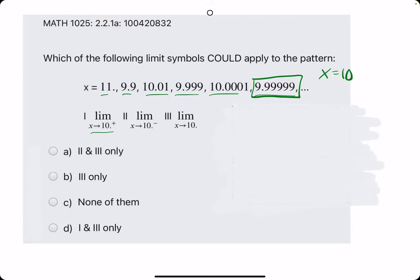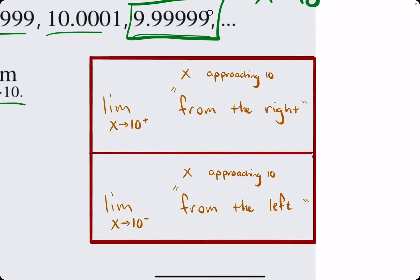So as we look at our options here, we have approaching 10 with a plus sign, x approaching 10 with a negative sign, and then just x approaching 10. The limit as x approaches 10 with a plus sign means x is approaching 10 from the right. For example, it could be 12, 11, 10.5, 10.1, and so on — values that are greater than 10 decreasing towards 10.